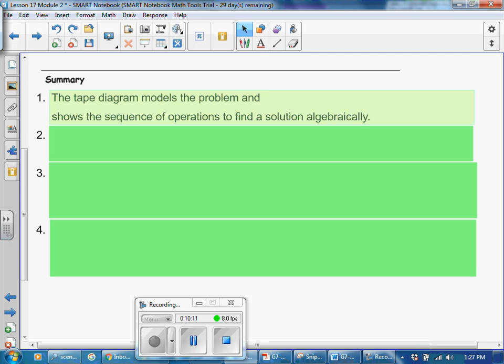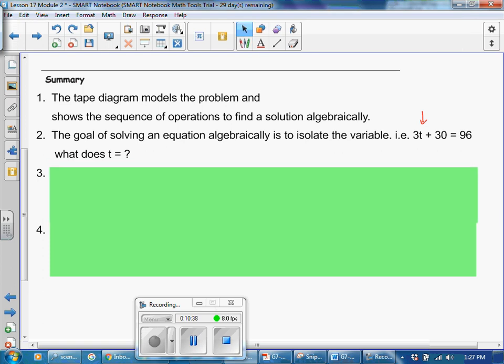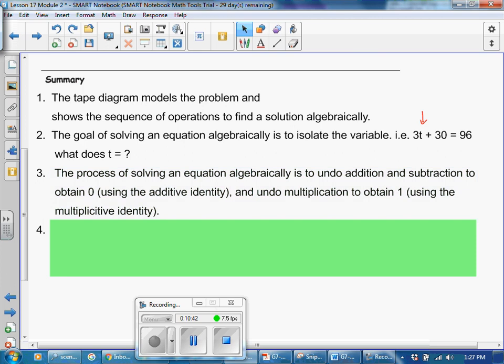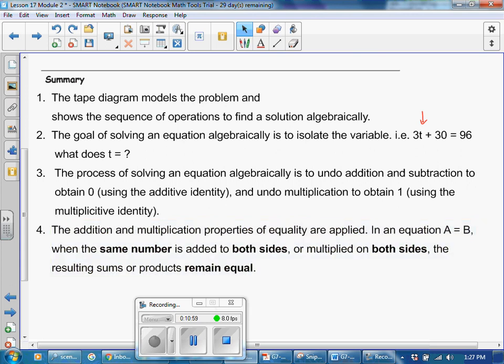In this lesson, you have learned the tape diagram models the problem and shows the sequence of operations to find a solution algebraically. The goal of solving an equation algebraically is to isolate the variable. For example, in the equation 3t plus 30 equals 96, we are looking to figure out what does t equal. The process of solving an equation algebraically is to undo addition and subtraction to obtain 0 using the additive identity and undo multiplication to obtain 1 using the multiplicative identity. The addition and multiplication properties of equality are applied. In an equation, if A equals B, when the same number is added to both sides or multiplied on both sides of the equal sign, the resulting sums or products remain equal.